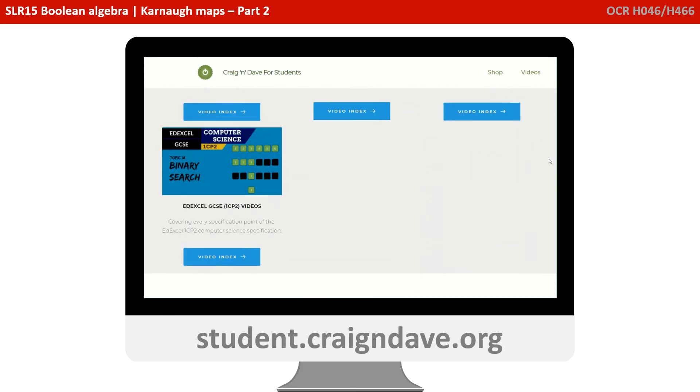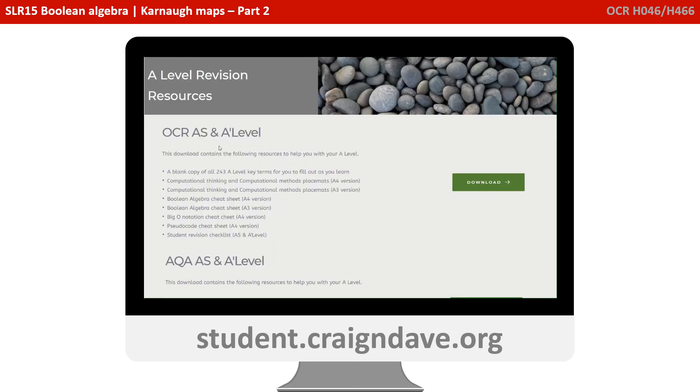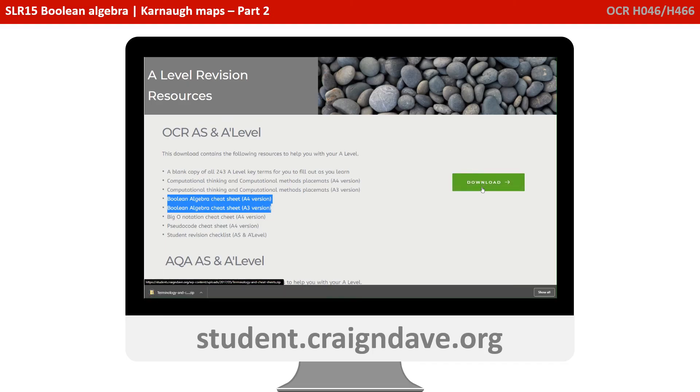You can find this over at student.craigndave.org. Just scroll down to where it says A-level revision. If you select that, you will see OCR A-level revision, including a whole bunch of free resources, including these cheat sheets. You can click download, no subscription or logins required, and you'll get access to this cheat sheet.